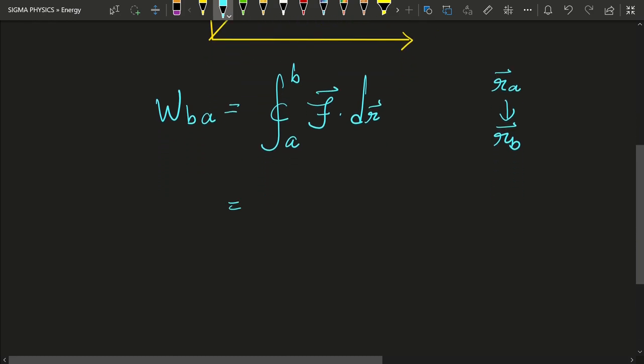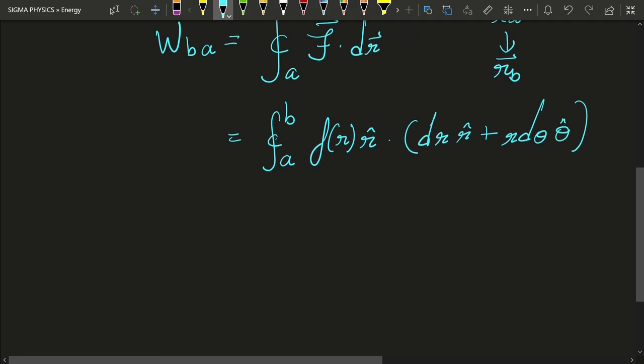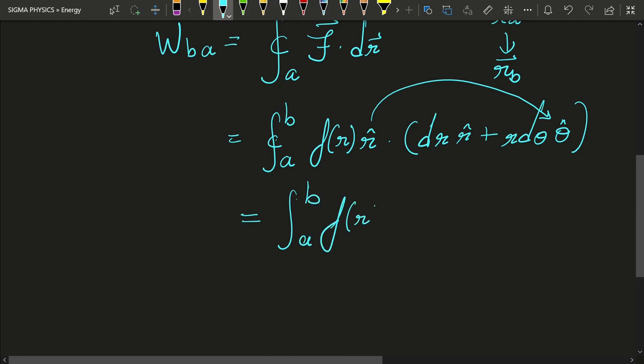And now what we are going to do is just substitute the values. So we know that f for a central force looks like this and dr looks like this. And now you can easily see that the dot product of r cap with theta cap is zero because they both are perpendicular to each other and cos 90 is zero. And hence what we are left with is integral from a to b f of r dr.